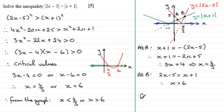So again, we can see that from the graph, we get that x must be less than 4 thirds, or x must be greater than 6.